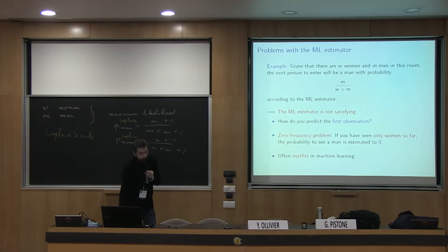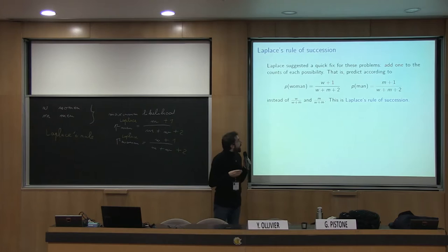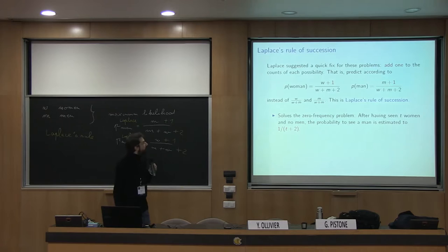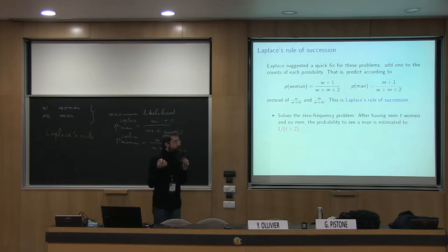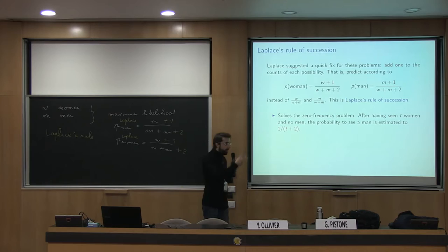There is a well-known alternative: Laplace's rule of succession — just add one to all the counts. To give the order of magnitudes: after time t, if you've seen only t women and zero men, the probability to see a man next is estimated to be one over t plus two. So remember this order of magnitude of one over t, because it will play a role in the next slides. Typically, different predictors differ at order one over t.